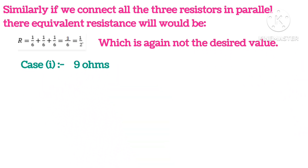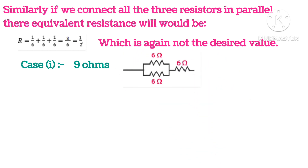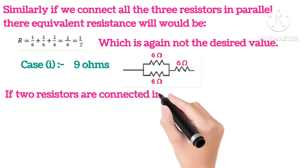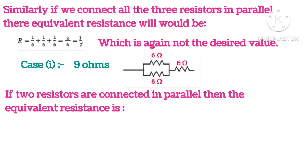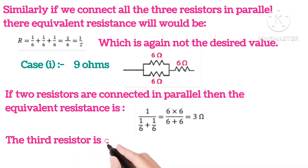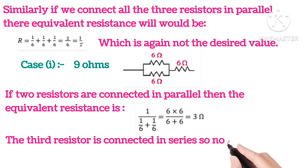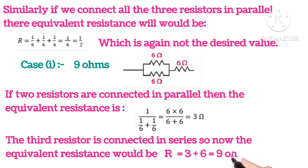So let's take case 1, 9 ohms. You can see how we connected. If 2 resistors are connected in parallel, the equivalent resistance in parallel connection is 3 ohms. Then the third resistor which is connected in series, we will add 3. So we will get equivalent resistance R equals 3 plus 6, that is 9 ohms.